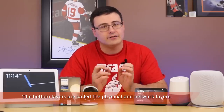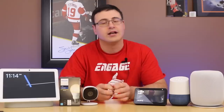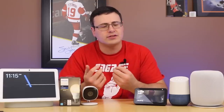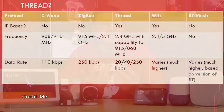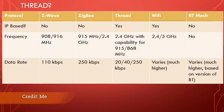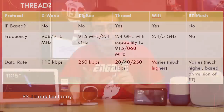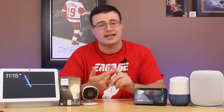That application layer being defined by those protocols means you just have one application. The best example I always use is Samsung SmartThings — one application that can set up, configure, customize, and control all of your Zigbee and Z-Wave devices. One app to rule them all. Now Thread doesn't do that. Thread doesn't have that application layer, which means you can define it in a number of ways.